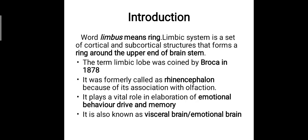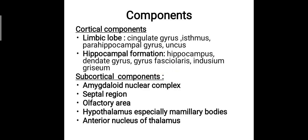It is also known as the visceral brain or the emotional brain. Structurally, the limbic system consists of two components: the cortical components and the subcortical components. The cortical components are further divided into the limbic lobe components and the hippocampal formation.